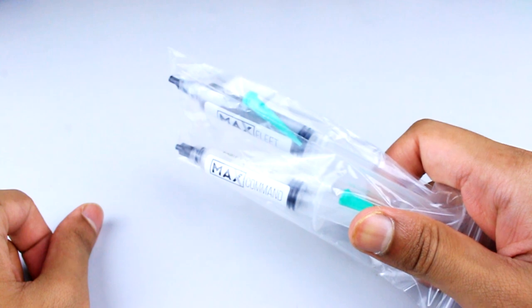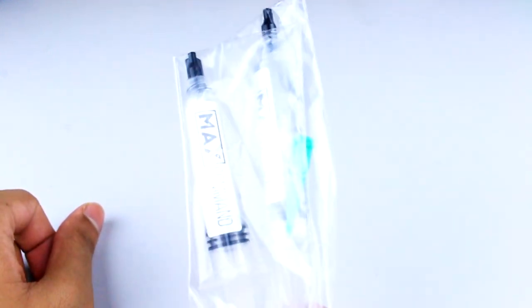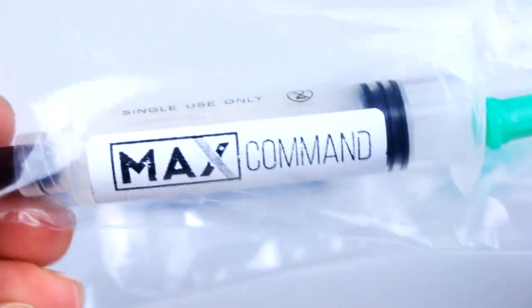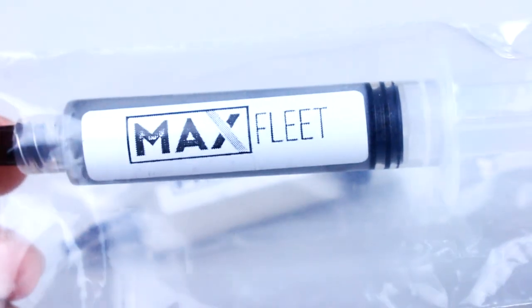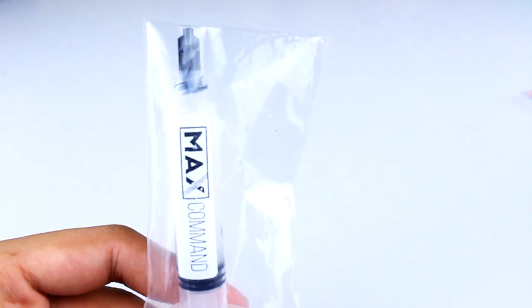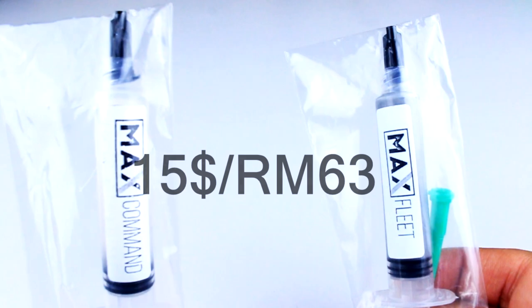First thing first, the Max Lube System has two types of lube: the Max Common or silicon-based lube, and the Max Fleet or non-Newtonian lube. So what is Newtonian? We will come back to that later. This lube costs $9 each and $15 if you buy them together.